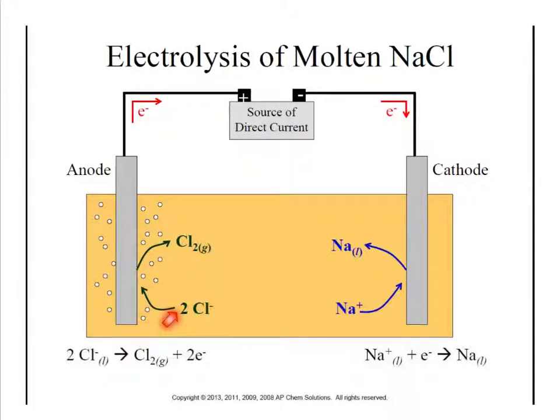However, with the use of this direct current — that pump — we're able to remove the electrons back from chlorine and give them back onto sodium, generating something that otherwise wouldn't happen naturally.